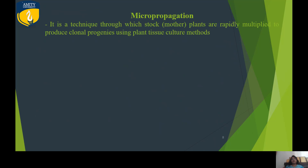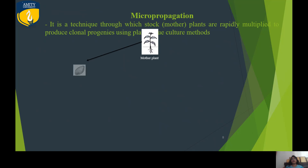To give a glimpse of micropropagation: it is a technique through which stock or mother plants are rapidly multiplied to produce clonal progenies. The explant is a small piece of plant taken from a mother plant and can be anything — seeds, nodes, nodal segments, leaves — as all plants have high regeneration potential.